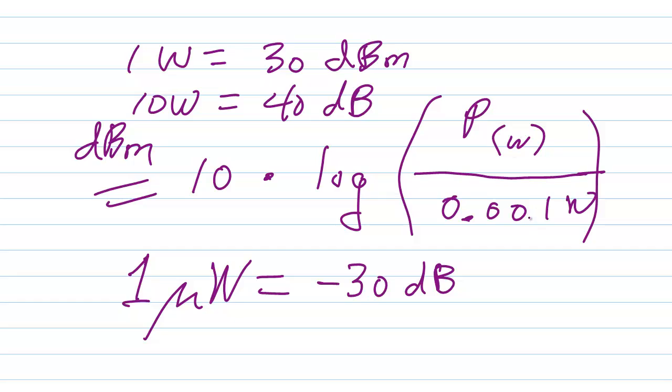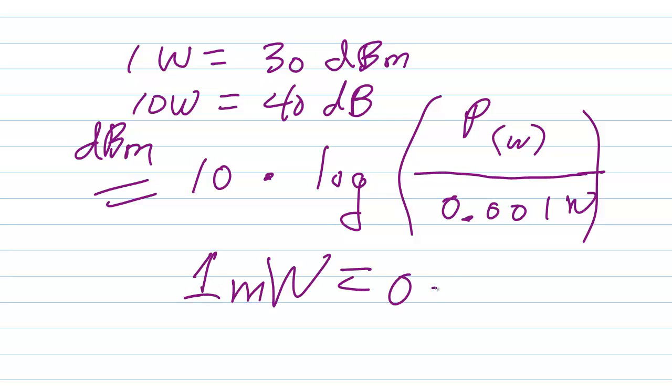Because a millionth divided by a thousandth is a thousandth. The logarithm of that is minus three; times ten is minus thirty. So you can get an idea: one milliwatt is zero dBm. When you have zero dB, that refers to a ratio of one to one. So one milliwatt equals zero dBm.